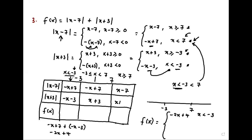We come to this interval. We add negative x plus 7 plus x plus 3. Negative x plus x is 0, and 7 plus 3 is 10. So f equals 10 for negative 3 less or equal to x less than 7.